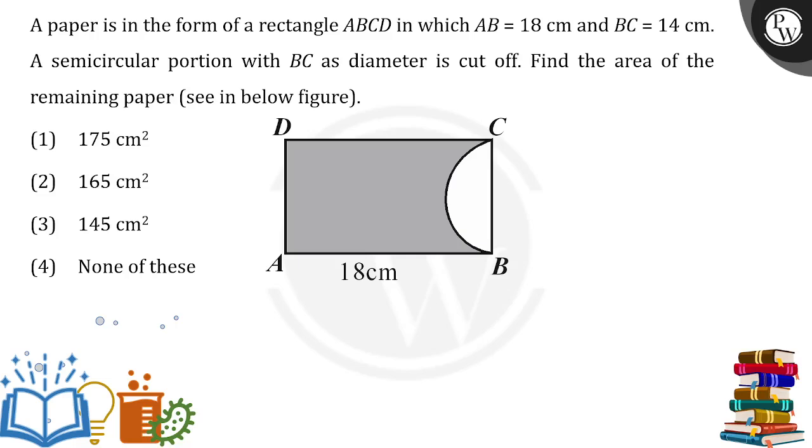In this question things are simple. We are having a rectangle and in the rectangle we are having a semicircle. We have to remove the area of the semicircle to find the area of the shaded portion.